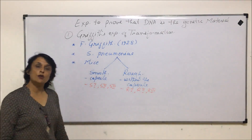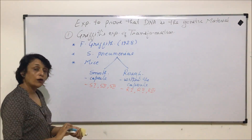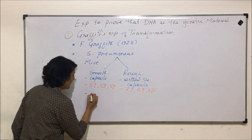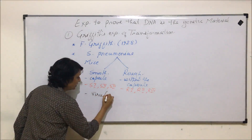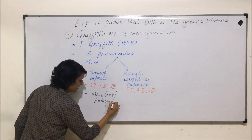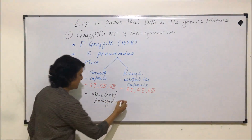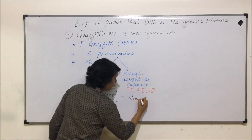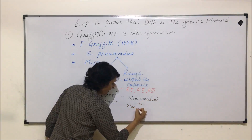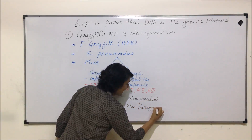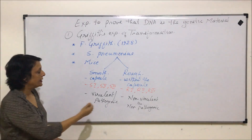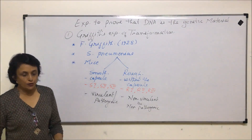There are various strains of these two types. Another important thing is that the smooth variety is virulent or pathogenic, and the rough variety is non-virulent or non-pathogenic. That means the smooth variety causes disease and the rough variety does not cause disease.